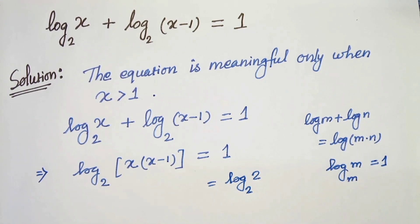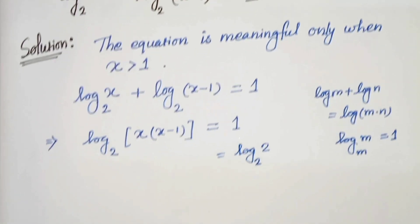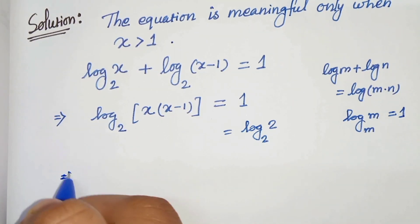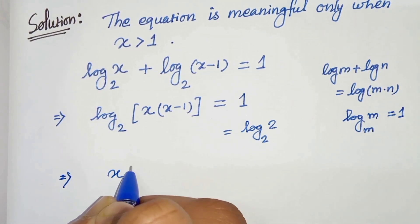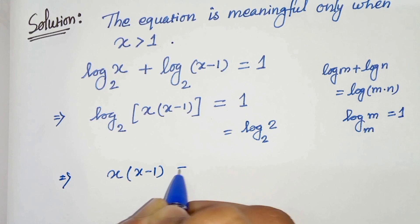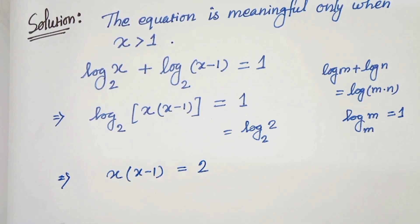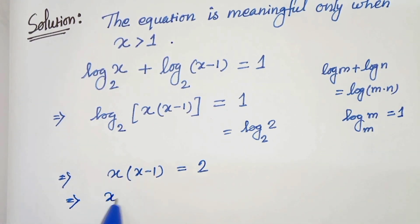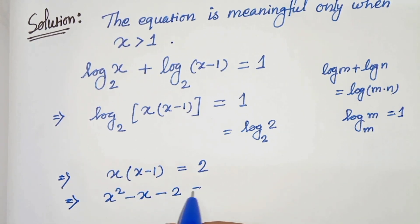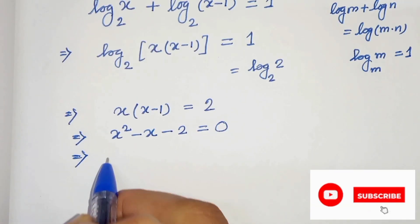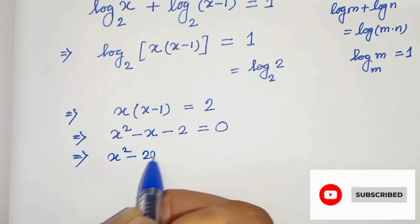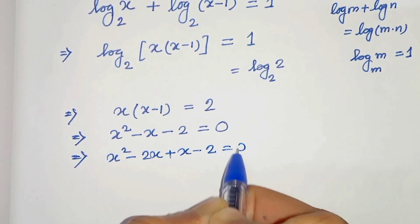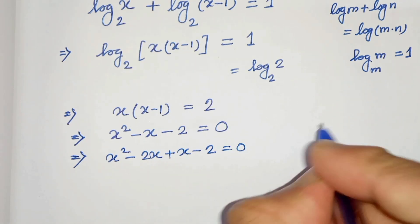Now let's simplify this: x square minus x minus 2 equals to 0. In the next step we can write x square minus 2x plus x minus 2 equals to 0. Here the product is minus 2 and sum is minus 1.